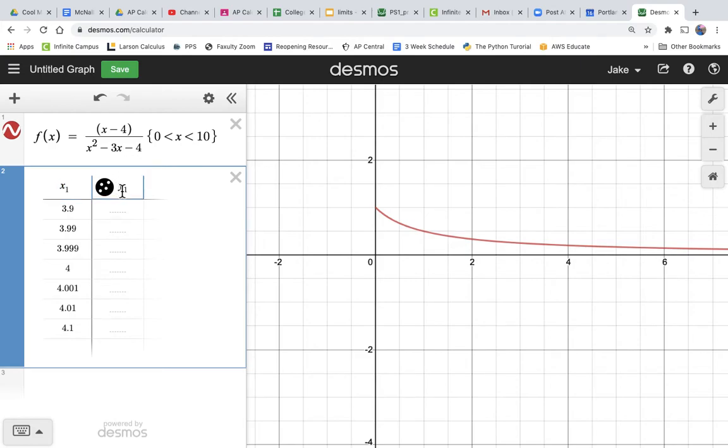So I'm going to click over here, delete this y, and change that to f of x sub 1. And whoa, Desmos just did it all for us.